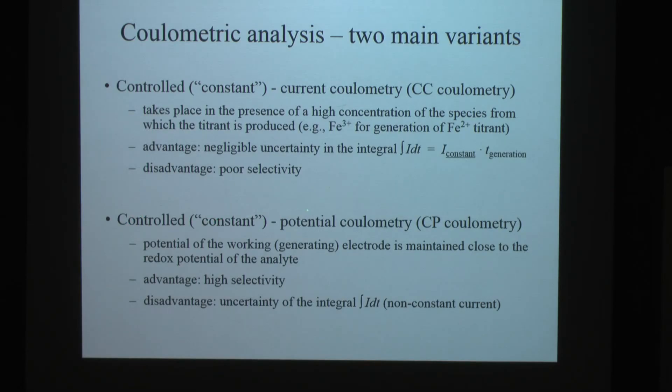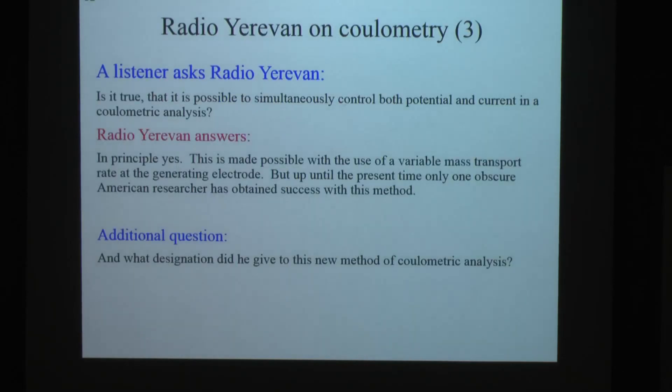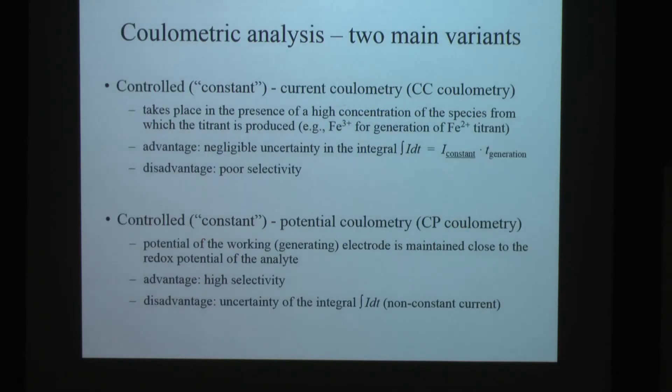The other way is you can do controlled constant potential coulometry called CP coulometry. There you can limit the potential of the working electrode close to the redox potential of the analyte. So anything that's not as strong as a reducing or oxidizing agent doesn't react and you get better selectivity. But the current is an exponential decay from the initial current, it exponentially decays down like this. And the uncertainty in the area under that curve is much lower than if it's a perfectly straight line. You can't bring that I out of the integral. So the typical uncertainties for this are on the order of 0.1%. This can be 0.005, 0.001% scatter. Here this is 0.1%.